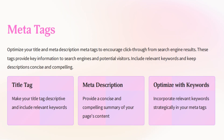Meta tags are another important on-page element. They're little snippets of code that provide information about your web page to the search engine — Google reads these things called meta tags. The two most significant ones are the title and the description. The title tag is the actual clickable headline in the search engine results, such as website.com/your-page. That is the title.